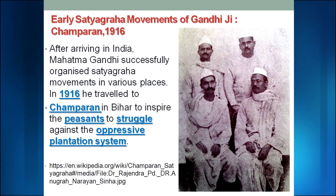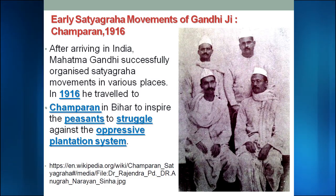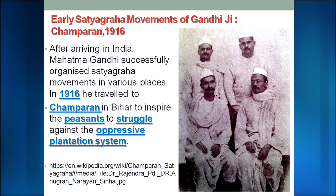The problem was that cultivating indigo reduced the fertility of the land. The system was called Tinkathia - farmers had to give three-twentieth of their land's produce as indigo to the British. The land for production was decided by the British. Gandhi Ji, on the basis of Satyagraha and Ahimsa, united the farmers in Champaran. You can see some leaders here; on the left side is the picture of Dr. Rajendra Prasad, who went on to become India's first President.